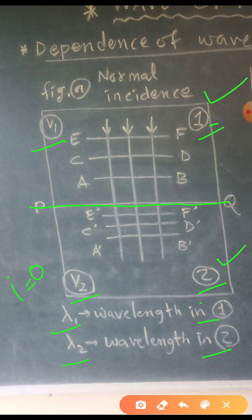The three successive wavefronts AB, CD and EF — see here AB, CD and EF — are separated by a distance lambda 1. It means the distance between these two wavefronts is lambda 1. It is assumed.